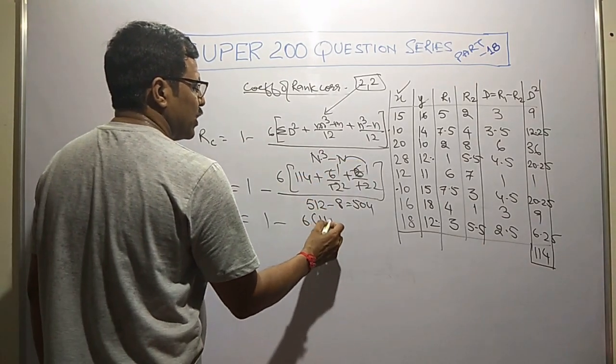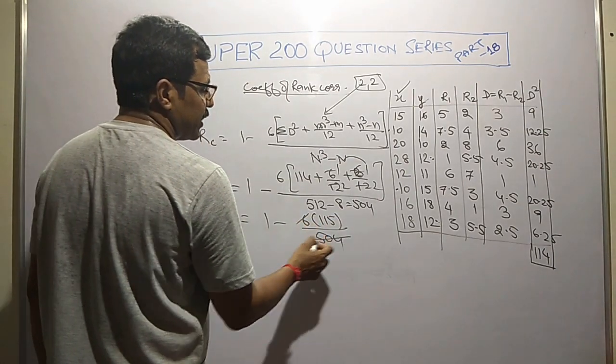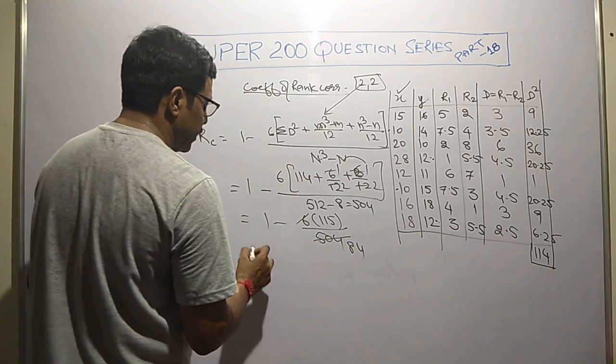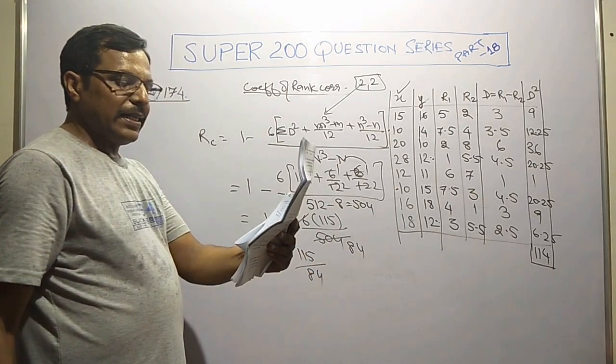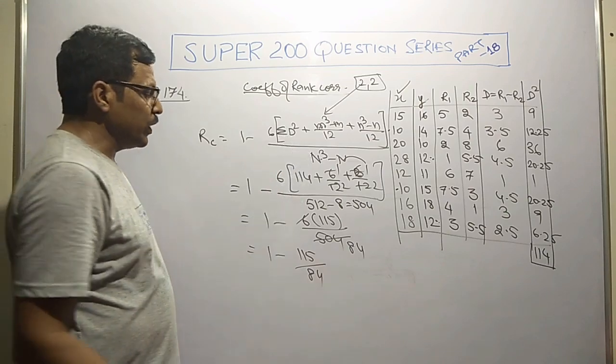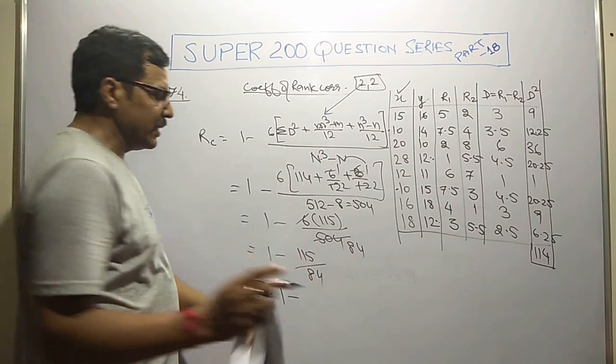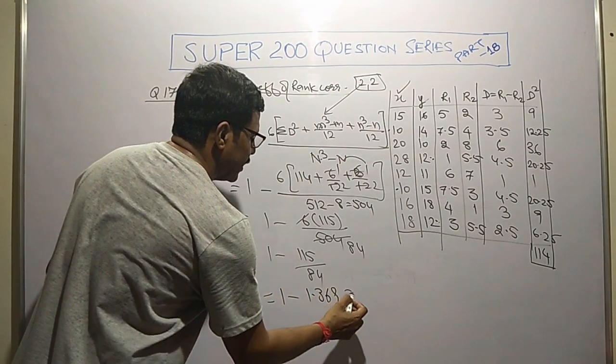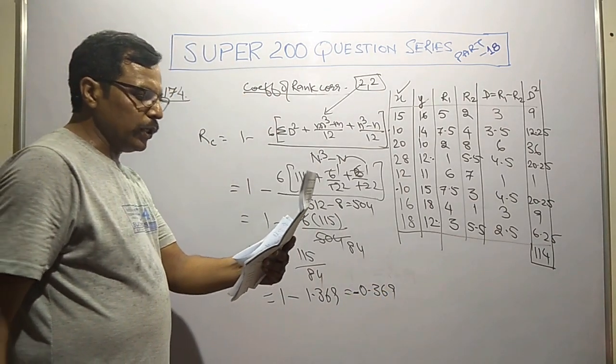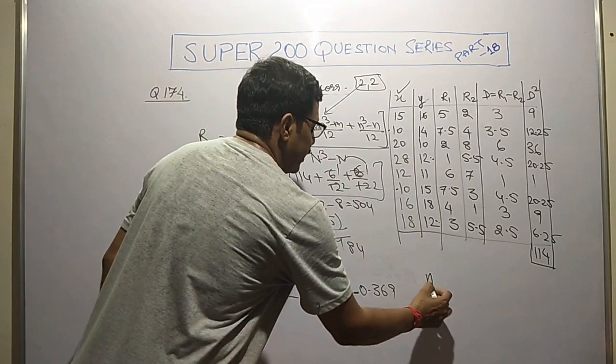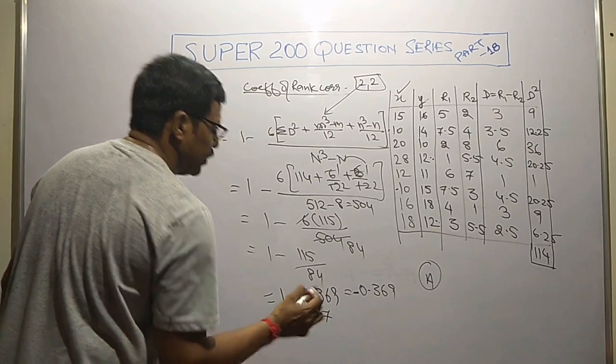Working out: 1 minus 6 times [114 plus (8-2)/12 plus (8-2)/12] over 504. This gives 1 minus 115 over 84, which equals -1.369. So the answer is -0.369 with negative sign, shown in option A in rounded form as -0.37.